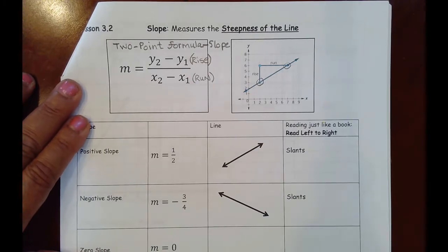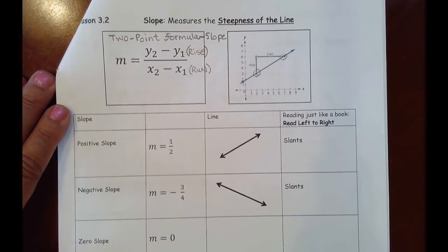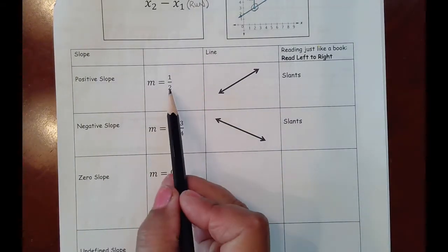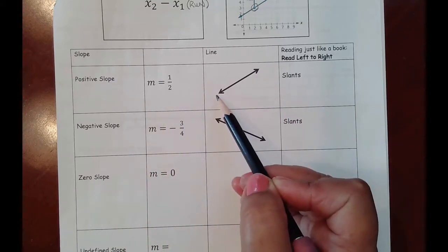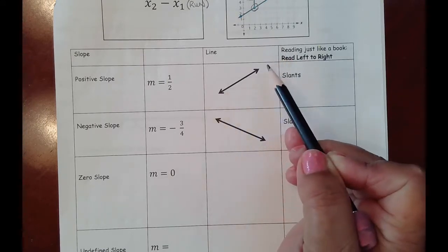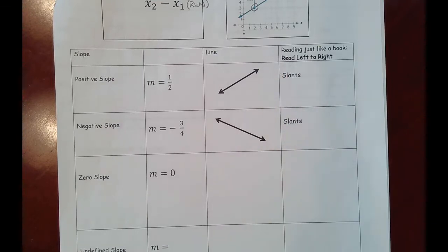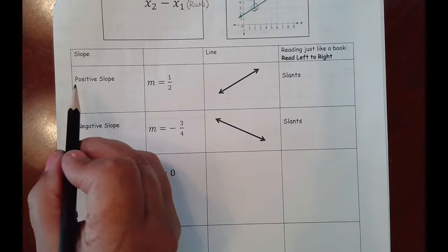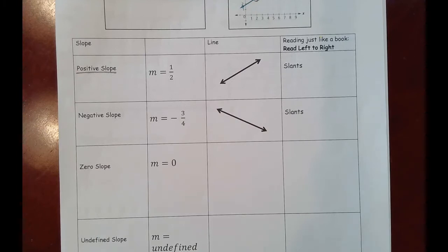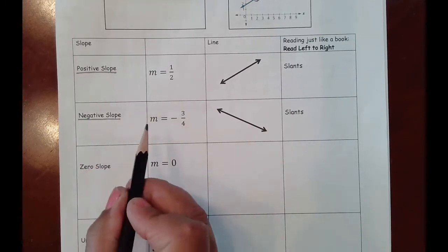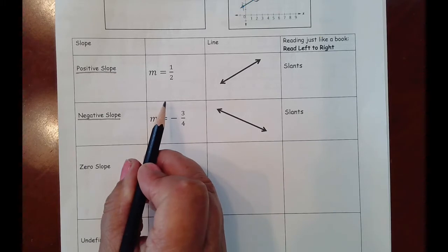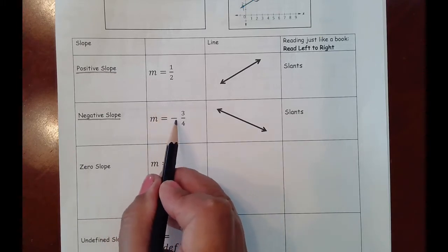I want you to know the relationship between the sign of the slope and the direction of the line. When the slope comes out positive, the graph climbs upward and to the right — this is also known as an increasing line. When the slope comes out negative, the line will climb upward and to the left.